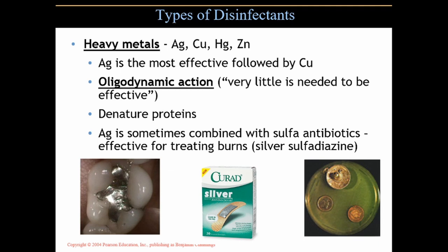We can use heavy metals — not an 80s band, but metals from the periodic table: silver, copper, mercury, and zinc. Silver is the most effective, followed by copper. A term applied to this is oligodynamic action, from Greek — olig meaning very little, and dynamic like dynamite — meaning a small amount is needed to be effective. They denature proteins. It appears these metal ions bond themselves to ribosomes, and as a result ribosomes can't produce their proteins, or they produce proteins that become denatured due to the interference of the metal ions.